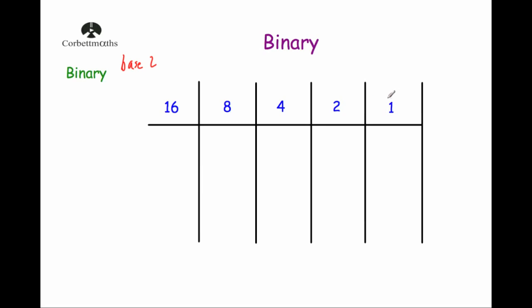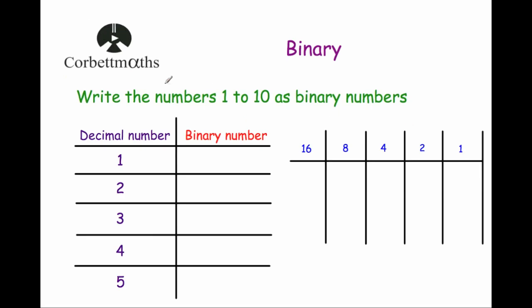So we're going to have our units, then times by 2 to get 2, then times by 2 to get 4, then 8, 16, 32, 64, 128, and so on. Let's have a look at how to write numbers as binary numbers. We're going to start off by writing the numbers 1 to 10 as binary numbers.